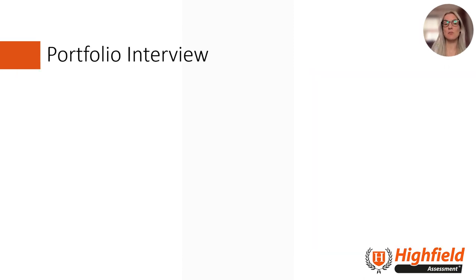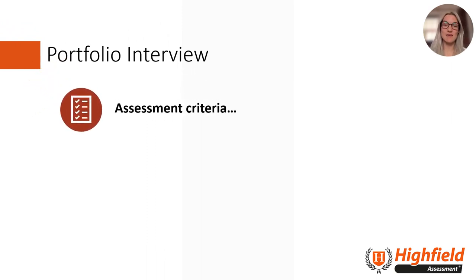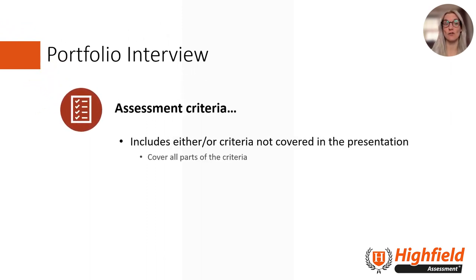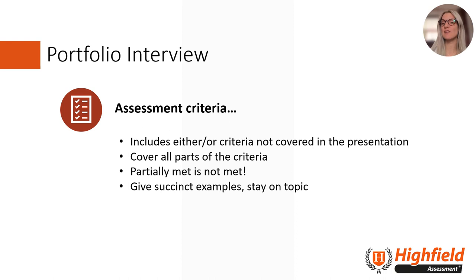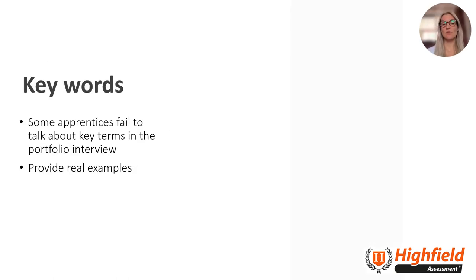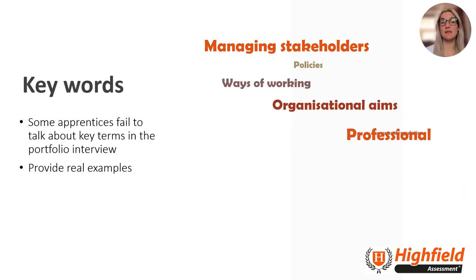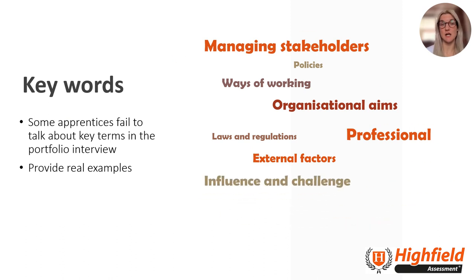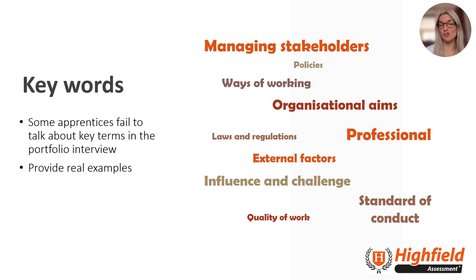Now let's move on to the portfolio interview. The assessment criteria are multifaceted — there is a lot to cover. The apprentice should have access to their portfolio during the interview for reference, but they don't want to get distracted by it as time is tight, so ensure it's easy to navigate. They could have some headline points or pieces of work that they want to talk about which would prompt discussion. Some apprentices fail to talk about key terms in the portfolio interview; they should provide real examples, and when discussing things such as internal and external factors they should explain how these impact their role. When looking for distinction, they should emphasise how they promote or champion things like policies and procedures.